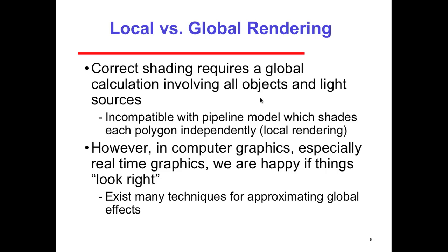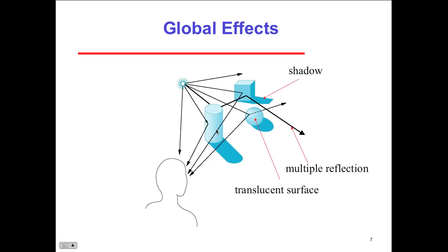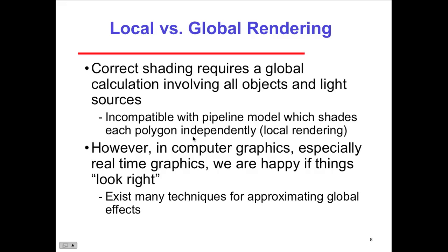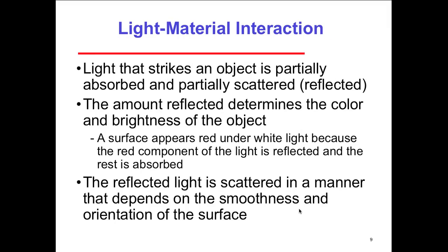Local versus global rendering: correct shading requires a global calculation involving all objects and light sources — everything in the scene. It's incompatible with the pipeline model, which shades each polygon independently, considered local rendering. The pipeline takes individual objects, creates them, puts them in orientation, then presents them to the user. In real-time computer graphics, we're happy if things just look right — we're happy if we can mimic it.